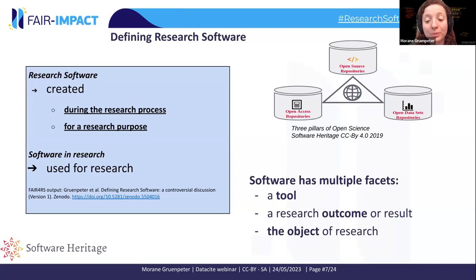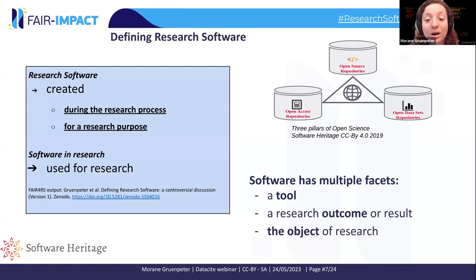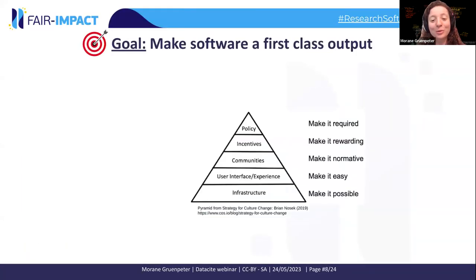Software is one of the pillars of open science. It should be at the same level alongside publications with open access repositories, and data with open data repositories. Software has multiple facets: it can be used in research as a tool, it can be the research outcome or result, and it can be the object of research — seen more as data to analyze. Importantly, software can be all three things simultaneously for different teams. Making software a first-class output is still a challenge we're working toward.